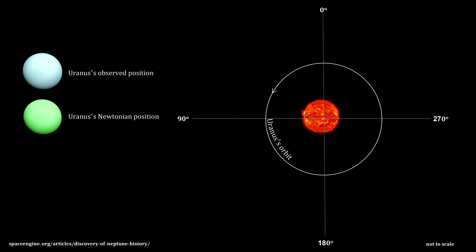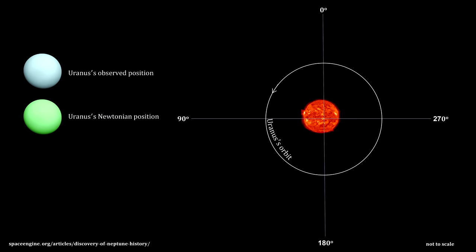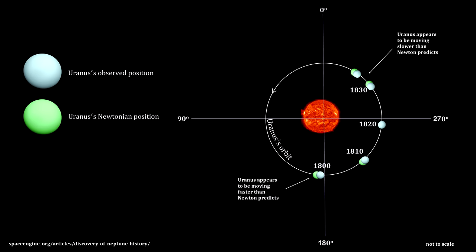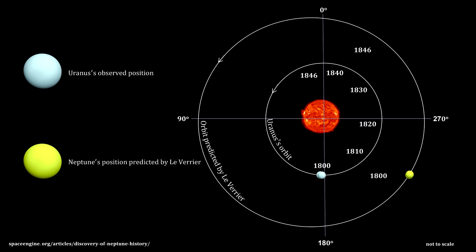A careful study over decades showed that Uranus's orbit did not fit Newton's equations. At times, it was moving faster than predicted, and at other times, it was moving slower. There were two schools of thought at that time. One held that Newton's theory did not hold up that far from the Sun, indicating that a new theory was needed. The other proposed that there's another planet beyond Uranus that pulled on it, which would keep Newton's theory intact.